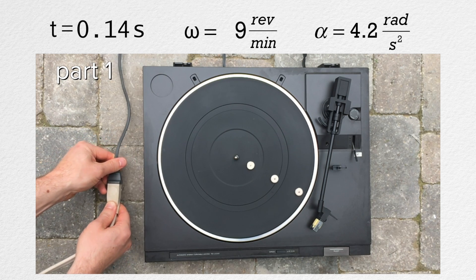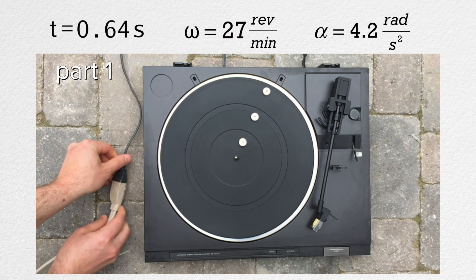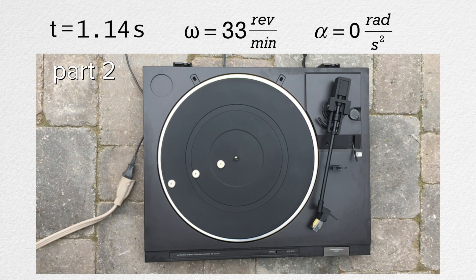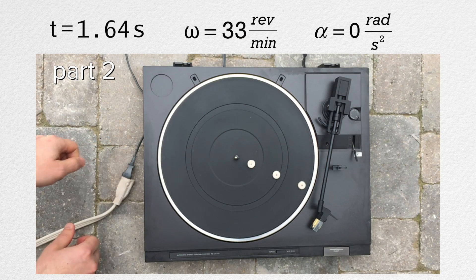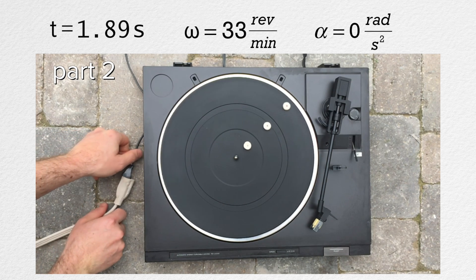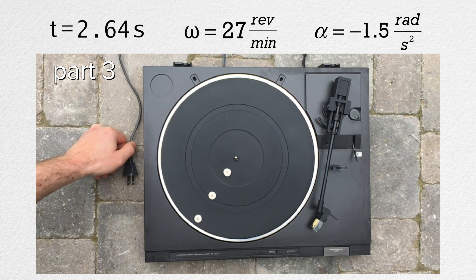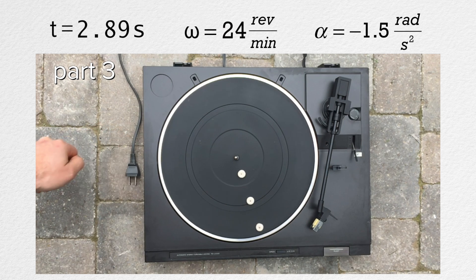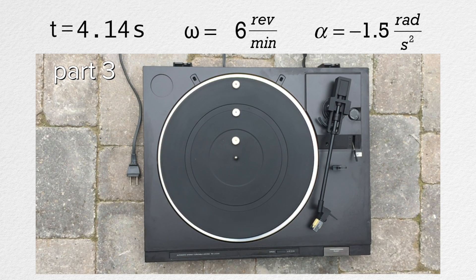Let's define part one as when the turntable is uniformly speeding up. Part two is when the turntable is moving at a constant angular velocity. And part three is when the turntable is uniformly slowing down. Billy, please describe what you see when we add the tangential velocity vectors to the picture.